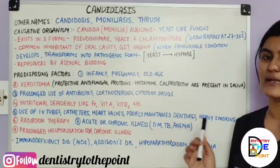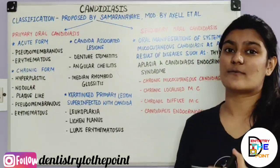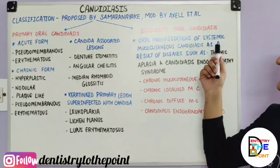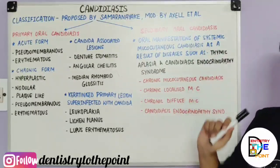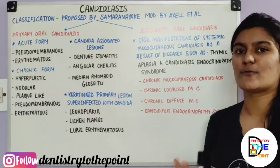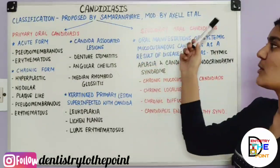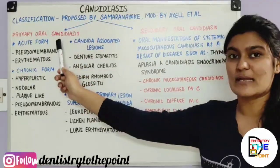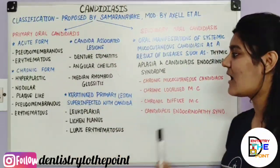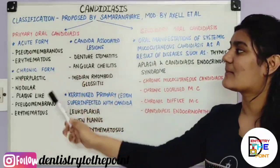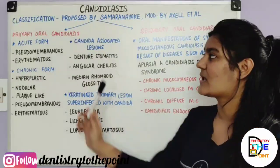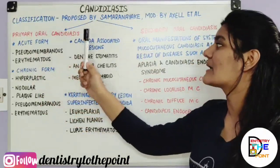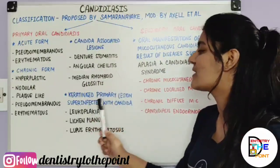Now moving on to the classification of Candidiasis. There are several classifications proposed, but the most accepted one was proposed by Samaranike and modified by Axell in 1991 and 1997 respectively. It is divided into two types: primary oral candidiasis and secondary oral candidiasis. Primary oral candidiasis is further divided into four forms — acute, chronic, Candida-associated lesions, and keratinized primary lesions superinfected with Candida.